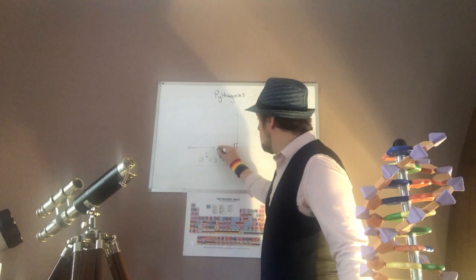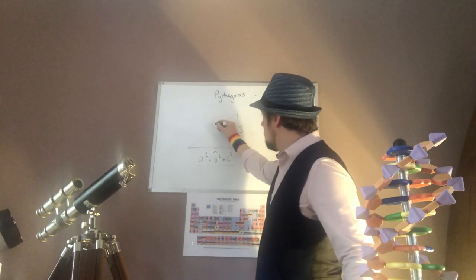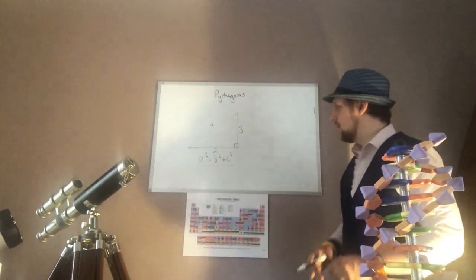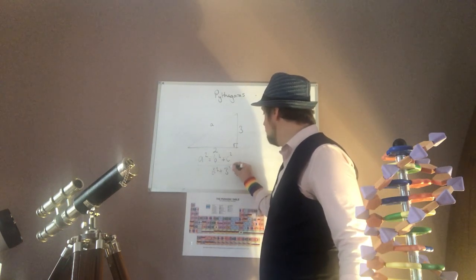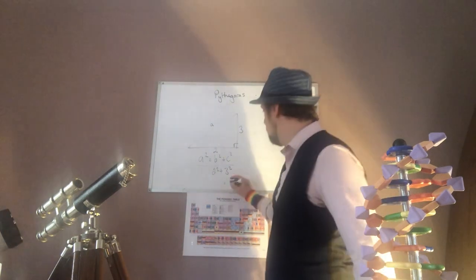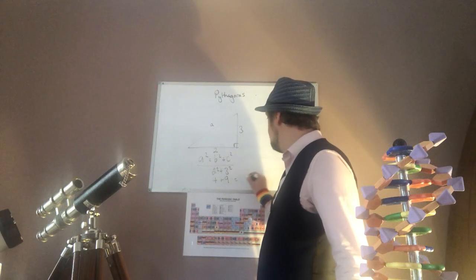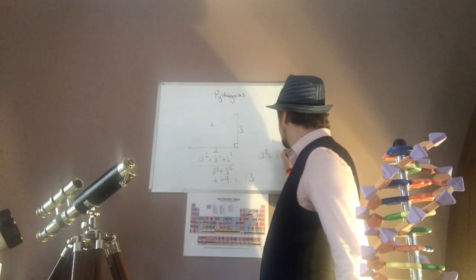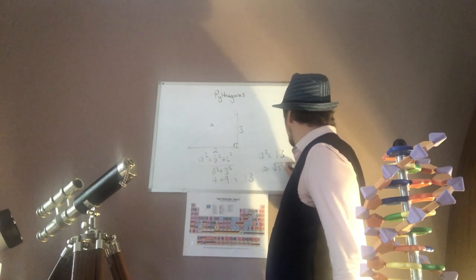So let's say this side is two and this side is three and I want to find out this side here which is the hypotenuse, which we'll call a in this case. So it would be 2² plus 3². So two squared, two times two which is four, three squared, three times three which is nine. Nine plus four equals thirteen. So a² equals thirteen.